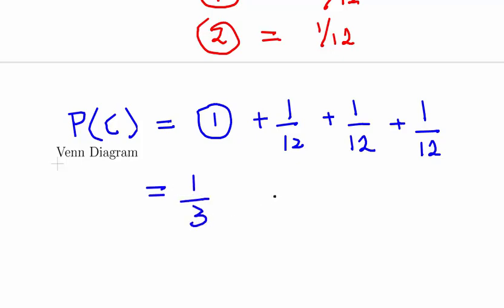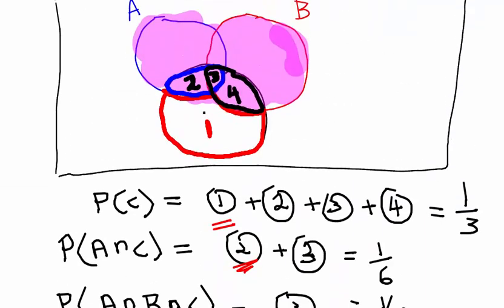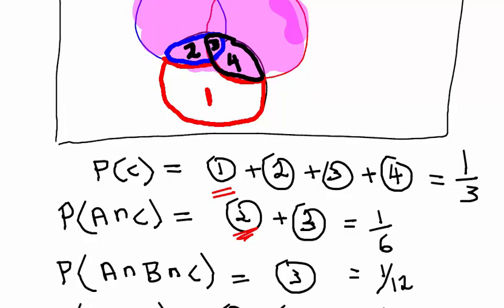So it won't take you long to realize that what corresponds to 1, the area that corresponds to 1 is also 1 over 12. So those are 4 areas with equal probability. Anyway, so what does that leave us?